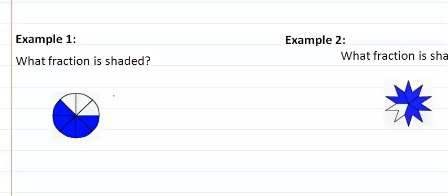So if you look at example one, what fraction is shaded? If we count how many blue parts we have, we have five and the whole is divided up into one, two, three, four, five, six, seven, eight, so that means we have five-eighths.